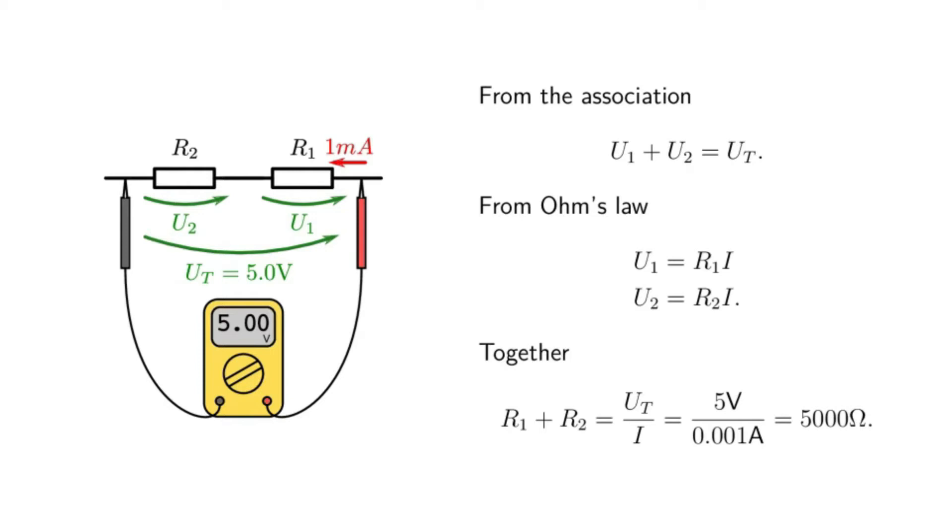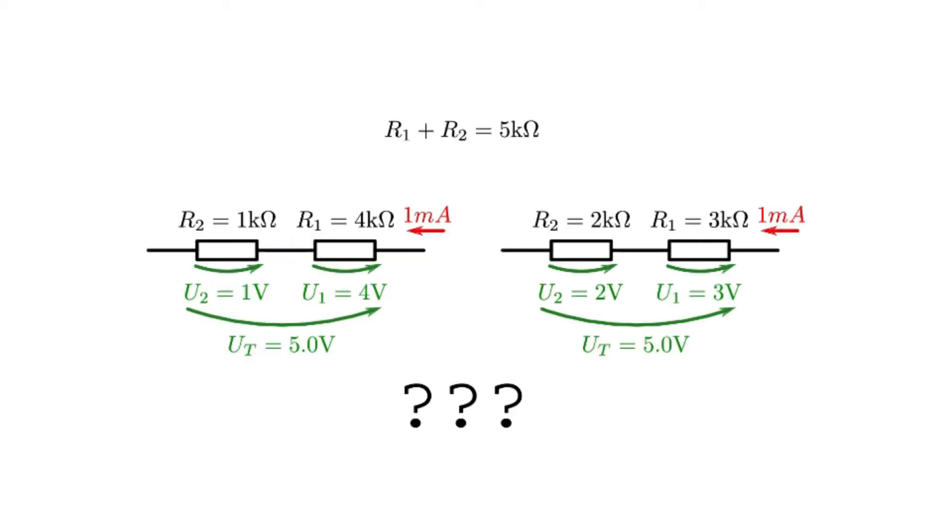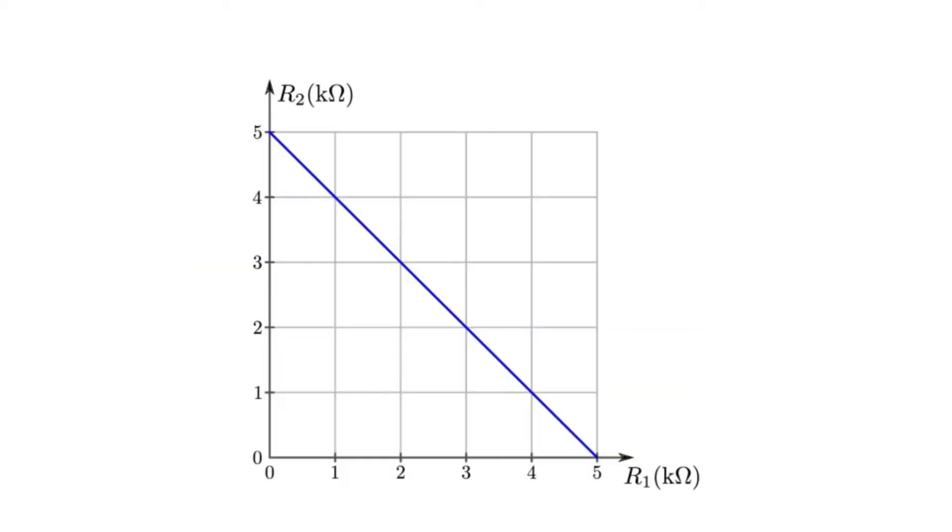Now, using Ohm's law for each resistor in this equation results in R1 plus R2 equal 5,000 Ohms. But this expression just relates the total resistance of the association R1 plus R2 with the measurements. We could have R1 equal 4 kilo Ohms and R2 equal 1 kilo Ohm, or we might have R1 equal 3 kilo Ohms and R2 equal 2 kilo Ohms. Both of these situations will fit our measurement. So, which solution is correct?